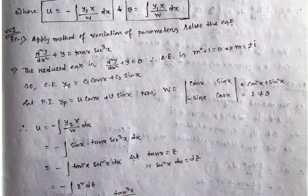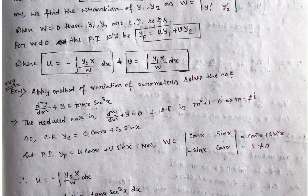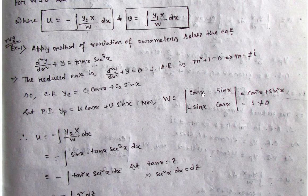So what is the complementary function? Let us denote it by yc. It equals c1·cos x plus c2·sin x. Here c1 times something plus c2 times something gives us y1 and y2: y1 equals cos x and y2 equals sin x. The Wronskian equals the determinant: cos x · cos x minus sin x · (−sin x) = cos²x + sin²x = 1, which is not equal to zero. So we can apply the method of variation of parameters.